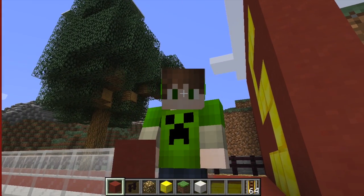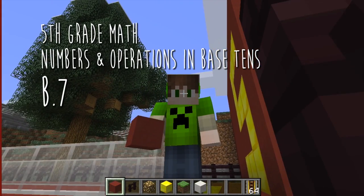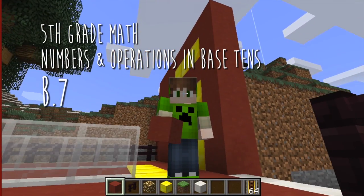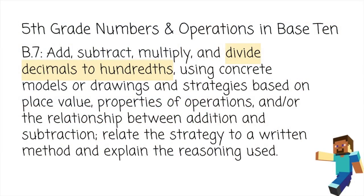I think that would work great with the 5th grade Numbers and Operations in Base 10 Common Core Standard B.7, which states: Add, subtract, multiply and divide decimals to hundredths, using concrete models or drawings and strategies based on place value, properties of operations, and or the relationship between addition and subtraction. Relate the strategy to a written method and explain the reasoning used.